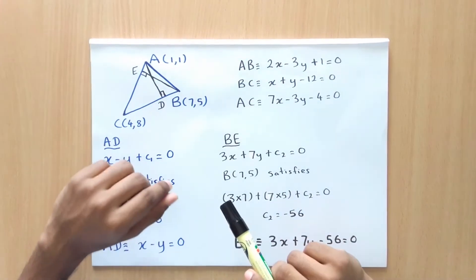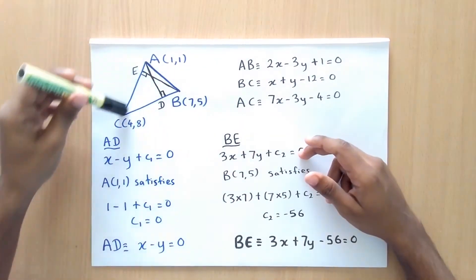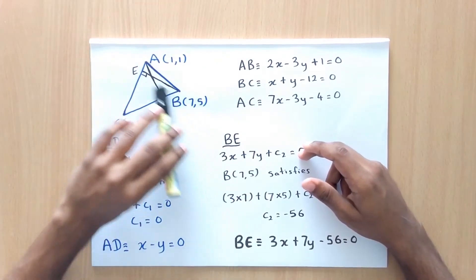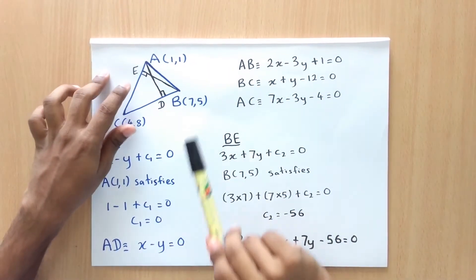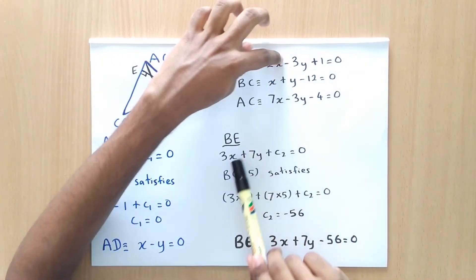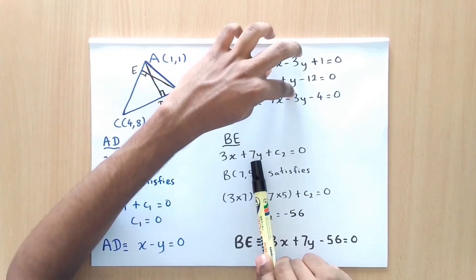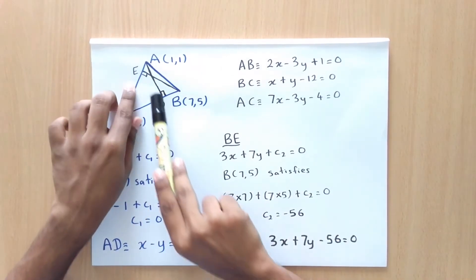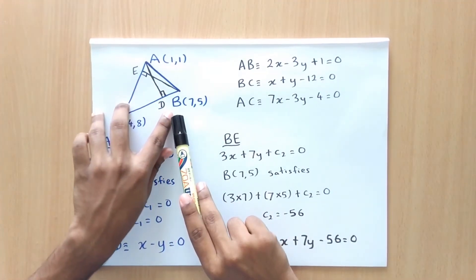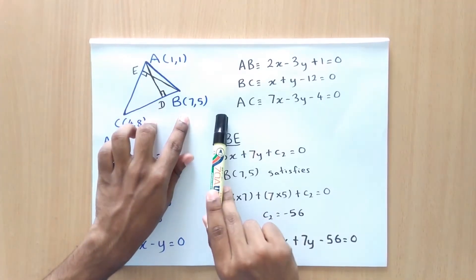Next, let's take the perpendicular of the line AC drawn from B. Since BE is perpendicular to AC, we can write the equation as 3x plus 7y plus C2 equals 0. Since this line BE is being satisfied by the point B75, we can substitute these values into this equation.